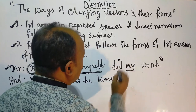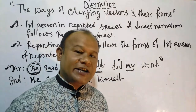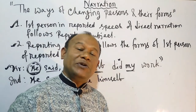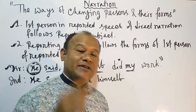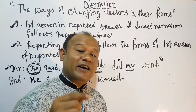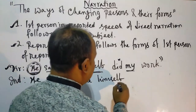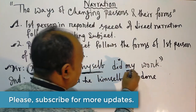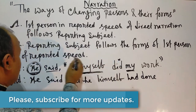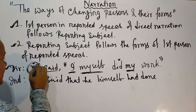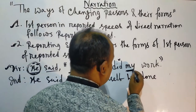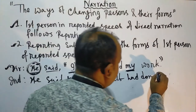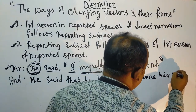As the verb 'did' is simple past tense, when changing to indirect narration it becomes past perfect. So it becomes 'he himself had done.' 'My' is also first person possessive, so it follows the reporting subject 'he' and becomes 'his.' The full indirect form is: 'He said that he himself had done his work.'